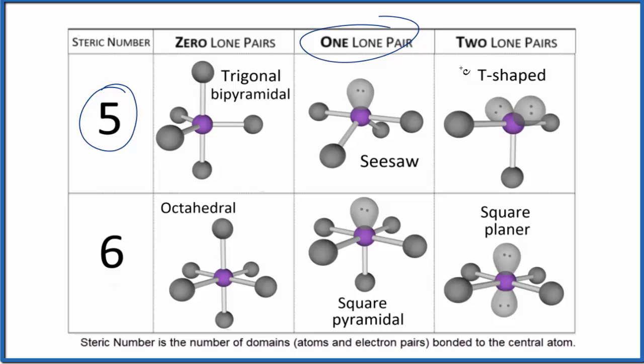If you're using the AXE notation to figure out the molecular geometry, A, that's the central atom. X, those are the atoms that are bonded to that central atom. And then E, that's the lone pair.